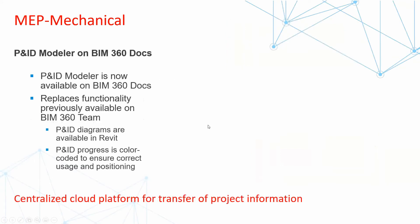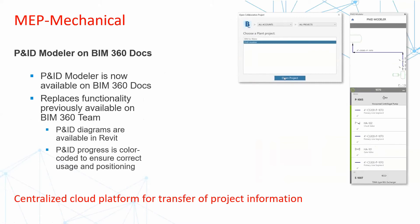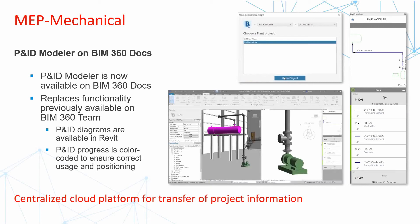The next item is the P&ID modeler on BIM 360 docs. This feature was introduced in previous versions of Revit starting from 2018, but it has become a lot better. The P&ID modeler is now available on BIM 360 docs and not just Teams, because Teams is being phased out. When you open a project on BIM 360 docs you are then able to collaborate it into Revit. The P&ID diagram is now also available in Revit from Plan3D itself, with a color code to ensure the correct usage and positioning when transferring data from Plan3D to Revit.